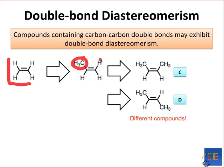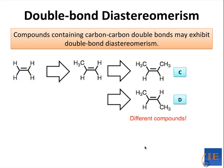What you should notice is that there are two possible ways to do this. We can add a methyl group to the top H, or we can add a methyl group to the bottom H, and the internal distances in these two molecules are different. The two methyl groups are much closer in C, and much farther away in D. So these two compounds are different, and most importantly for our purposes, they are diastereomers of one another.